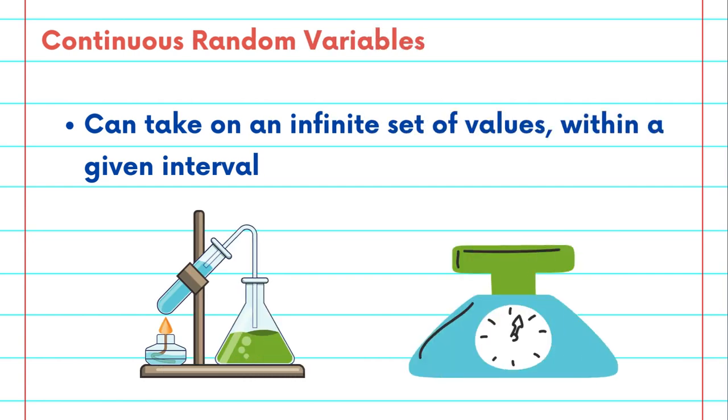Continuous random variables are variables that can take on an infinite number of possible values within a given interval. For instance, the time taken for a chemical reaction or the weight of an individual fall into this category. The defining feature is that they can assume any value within a specified range.